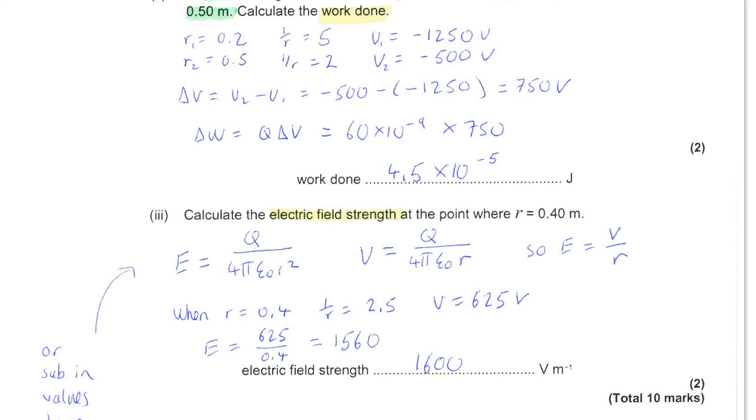Next, you're asked to calculate the electric field strength at the point where the radius is 0.4 meters. So, once again, we're doing a conversion to get the value for the reciprocal of r, which is 2.5, and from the graph, it's a green line this time, you can read 625 volts.